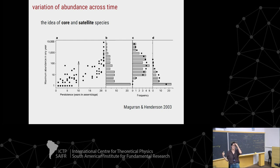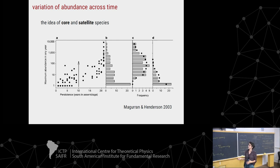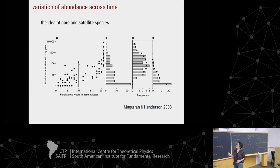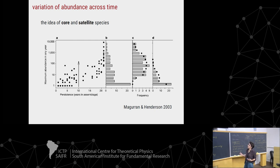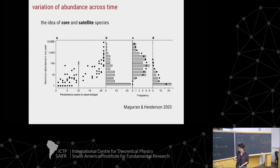One idea of how species abundance varies across time was proposed by McGuhun and Henderson. They proposed the idea of core and satellite species based on persistence through time, using statistics to separate the abundance. Core species are abundant over time and satellite species are rare over time, and they follow different distributions. Core species have much higher numbers of individuals. So this is one way to understand differences in abundance through time.